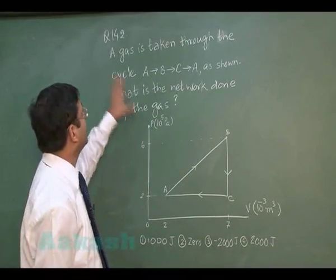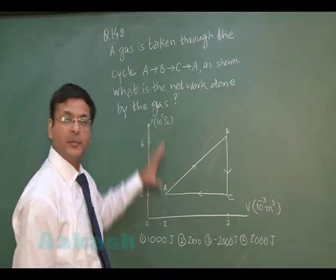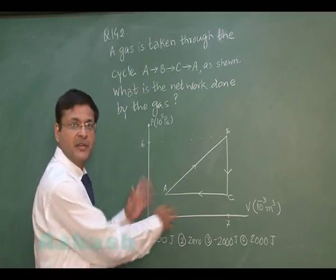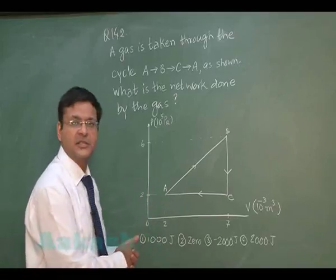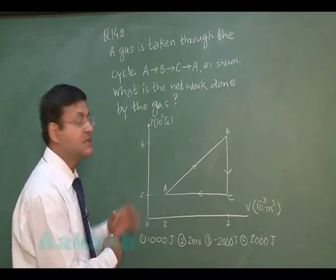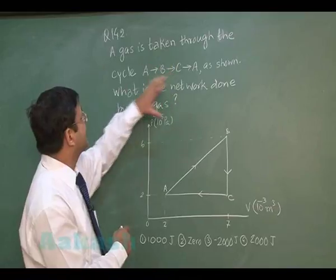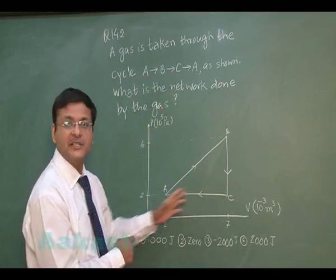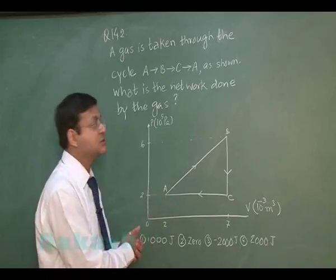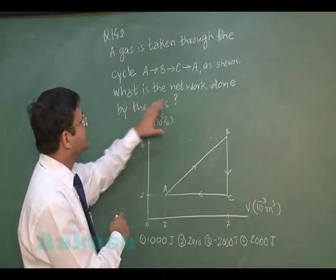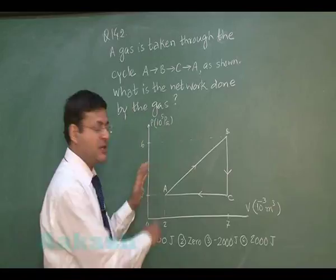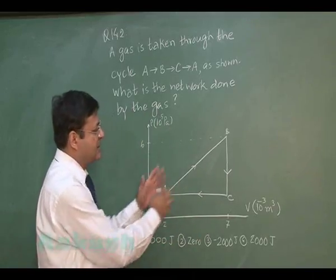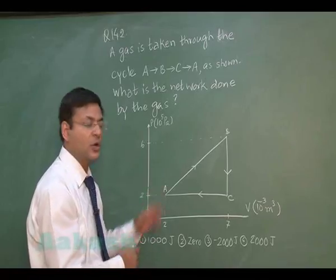Question 142 is based on thermodynamics and the indicator diagram, that is the PV diagram. A gas is taken through the cycle ABCA — a clockwise cycle — so naturally the work done will be positive. What is the net work done by the gas? For a clockwise cycle, work done is positive and it is simply the area under the cycle.